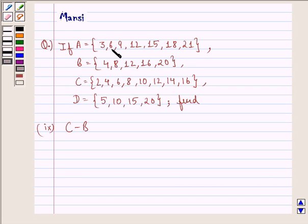If A equals the set {3, 6, 9, 12, 15, 18, 21}, B equals the set {4, 8, 12, 16, 20},